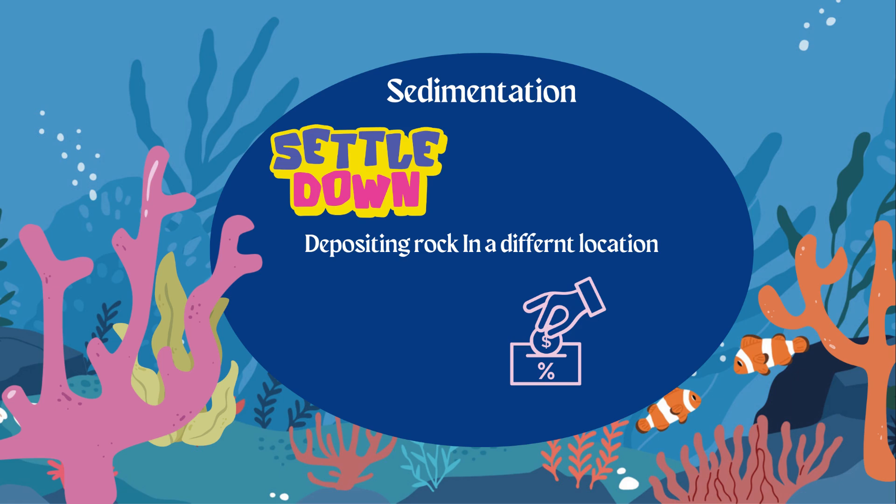Finally, sedimentation. Think: settle down. Sedimentation is the settling down — that is the depositing of rock in a different location. So after weathering, the breakdown, comes erosion, the movement. And finally, when that rock settles into that new location, that would be an example of sedimentation — where the gravel, the minerals, the rock is settling in a new location.